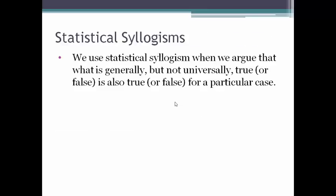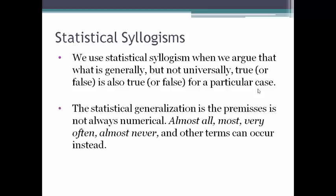We use a statistical syllogism when we argue that what is generally, but not universally, true or false is also true or false of a particular case. In our previous example, that particular case was the case of Elena. The statistical generalization in the premises is not always numerical. Terms like 'almost all,' 'most,' 'very often,' 'almost,' 'never,' and others can occur instead.